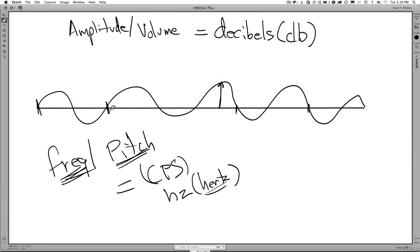We measure pitch or frequency along the horizontal axis and it's measured in cycles per second or hertz. We measure the distance vertically from the center line to the highest point on the waveform. We measure that on the vertical axis and we are measuring the volume or amplitude, and we are measuring it using the measurement called decibels.